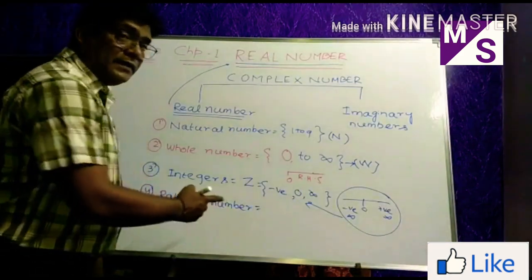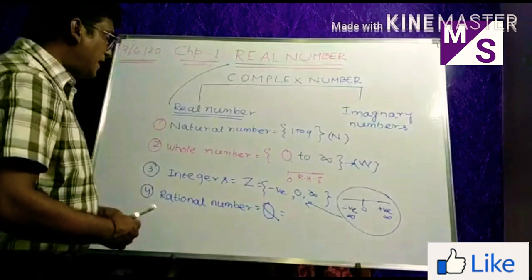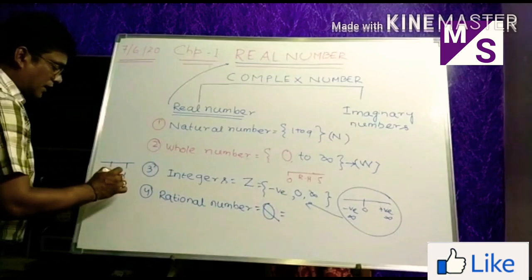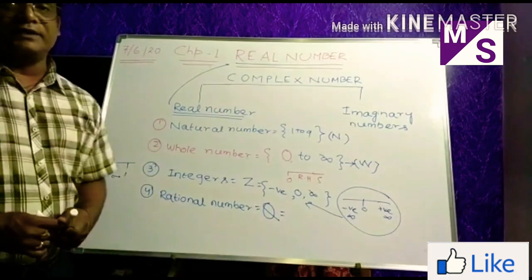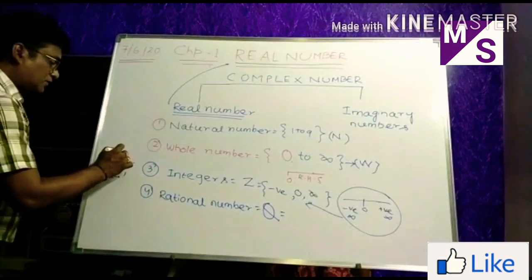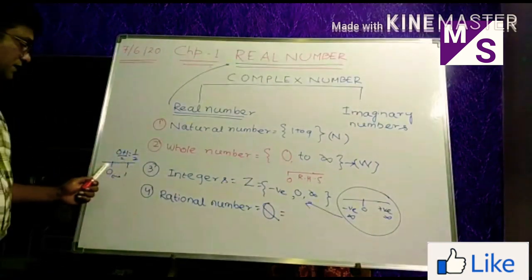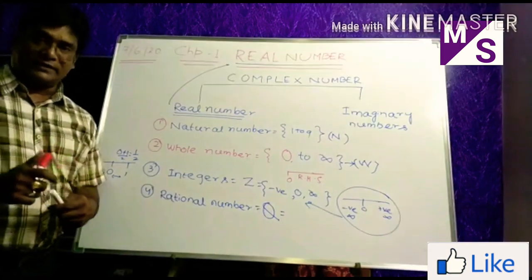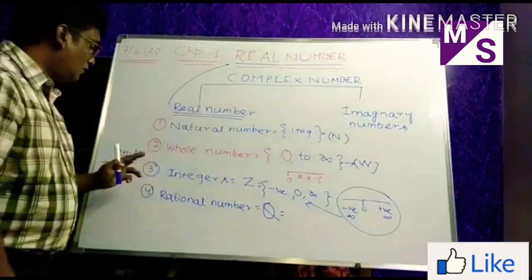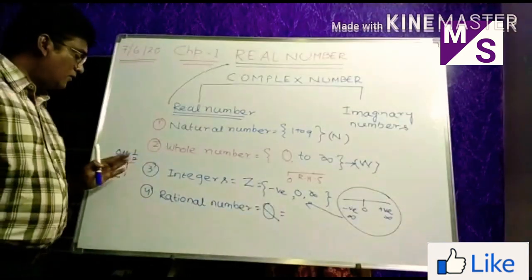Rational numbers are given the symbol Q. Suppose I draw here zero and one — in between zero and one, how many numbers are there? Definitely there are billions of numbers. If I add zero plus one and divide by two, what comes? One-half. So where is this one-half in this number system? One-half is called a fraction — a fractional number. So the rational number system deals with fractions.